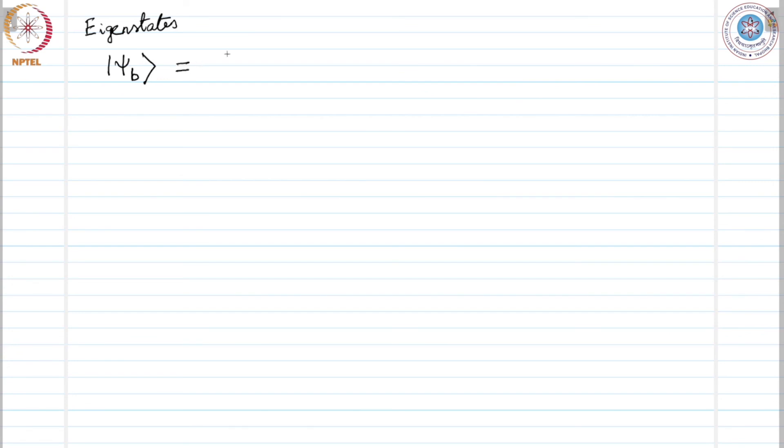Psi B is given as one over square root two times one plus two.